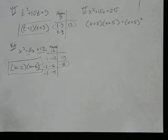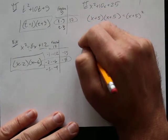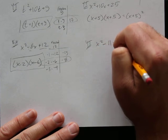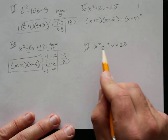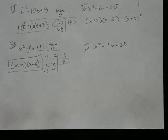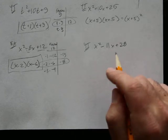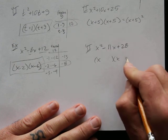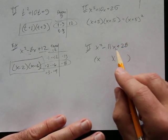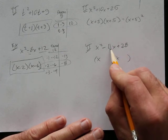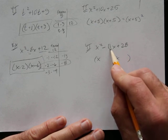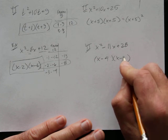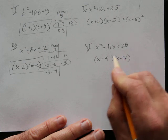Try x squared minus 11x plus 28 on your own. Since the constant is positive and the coefficient is negative, both factors are negative. 7 and 4 multiply to 28, and negative 7 plus negative 4 equals negative 11. So the answer is x minus 4 times x minus 7.